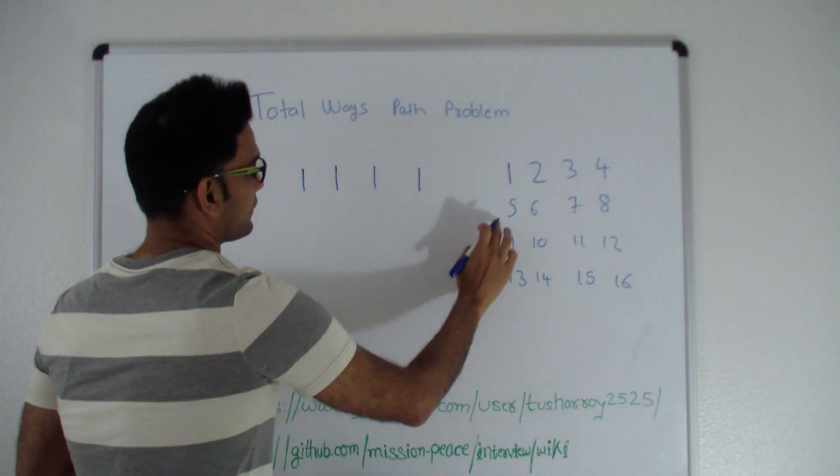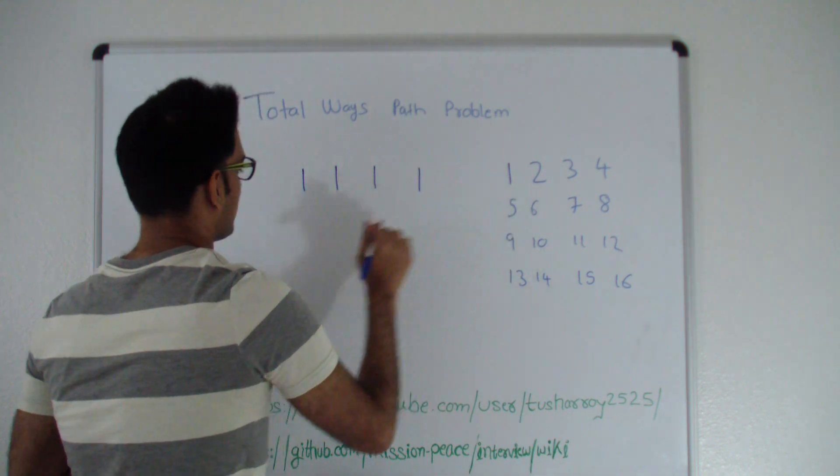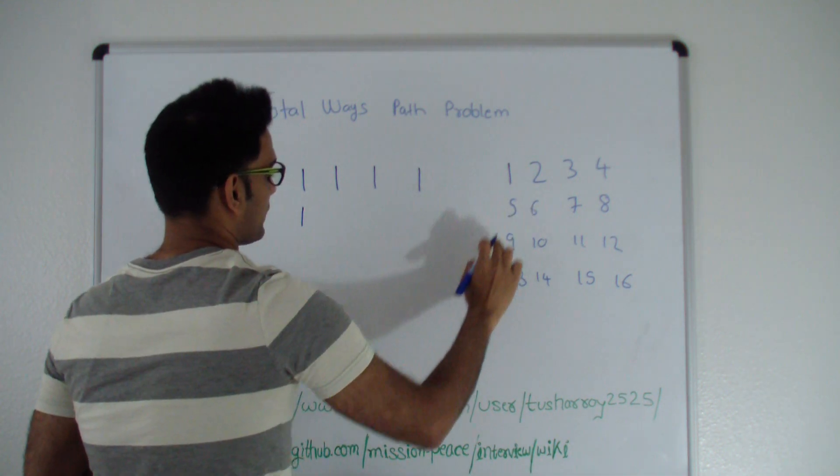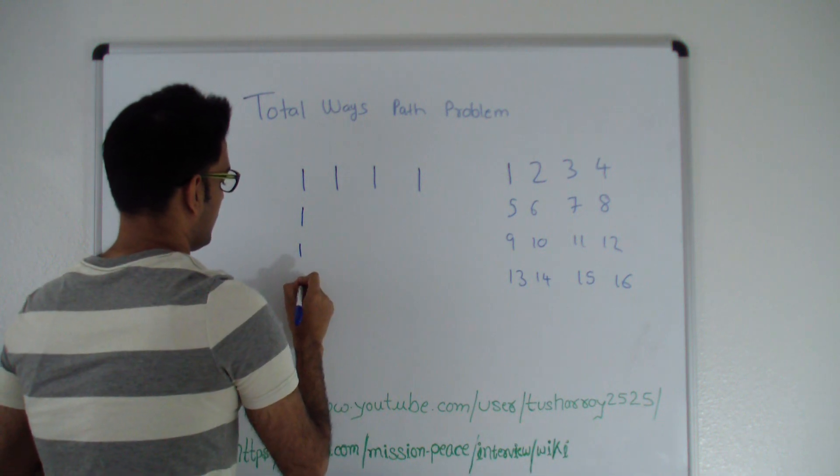Let's also fill up the first column. There's only one way you can reach here from here. So that's one. There's only one way you can reach here from here. So that's one. And that's one.